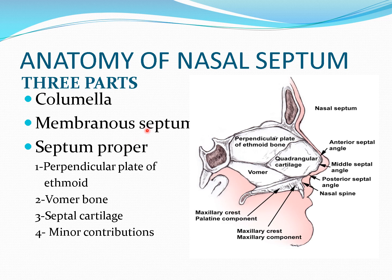We divide the nasal septum into three parts: the columella, which is made up of the medial crura of lower lateral cartilage; the membranous septum, which is lined by skin — stratified squamous keratinized epithelium; and then the septum proper, made up of quadrangular cartilage, perpendicular plate of ethmoid, vomer, and small contributions from rostrum of sphenoid, spine of maxilla, and spine of frontal bone.